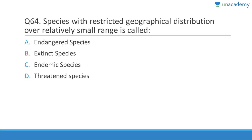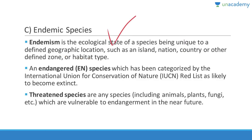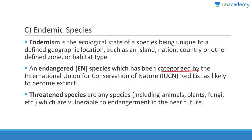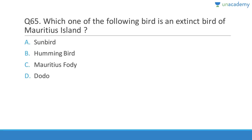Question sixty-four: Species with restricted geographical distribution over a relatively small range are called endemic species. Endemism is the ecological state of a species being unique to a defined geographic location such as an island, nation, country, or habitat type. Endangered species are those categorized by the IUCN Red List as likely to become extinct. Threatened species are any species vulnerable to endangerment in the near future.